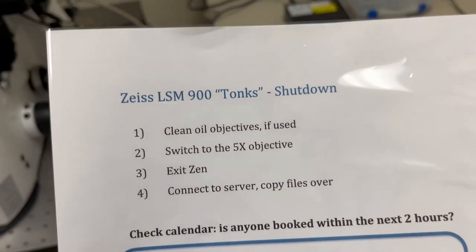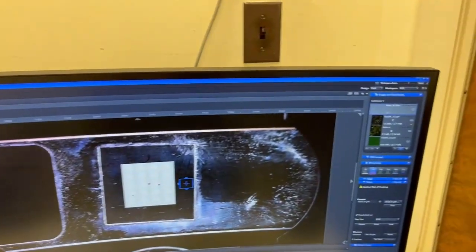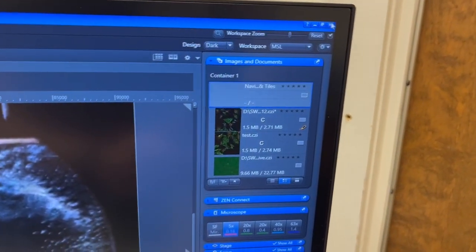The next step is to exit Zen. To exit Zen, we're just going to go to the top right and hit the X. When we exit Zen, it's going to ask us whether we want to save things. Typically, the answer is no.